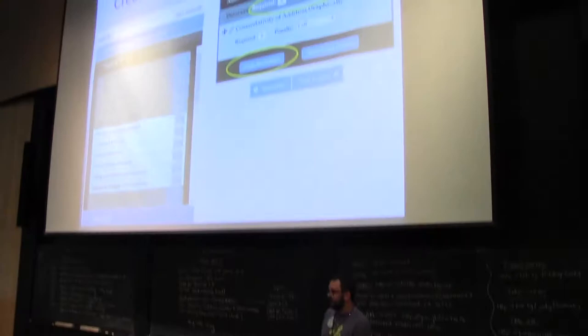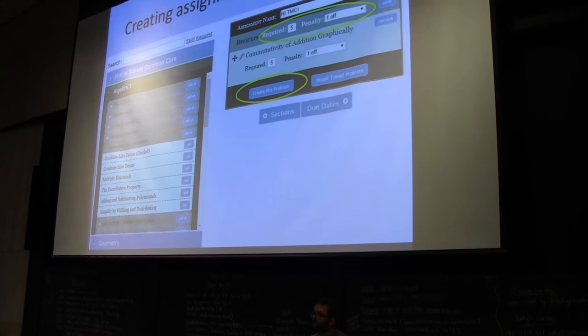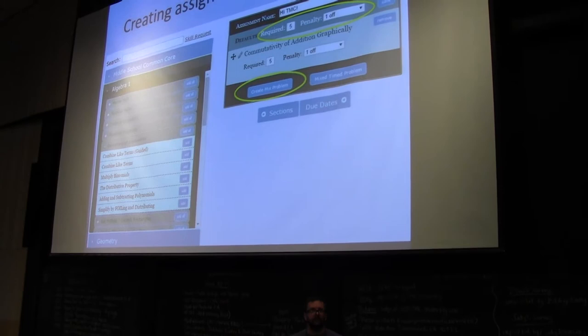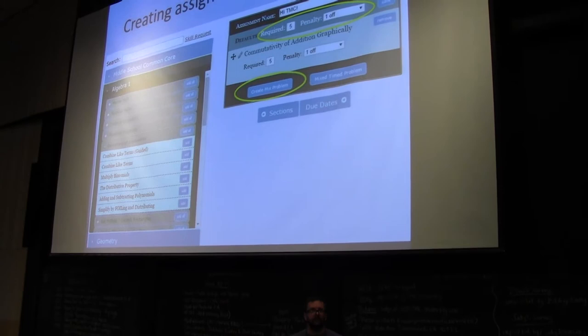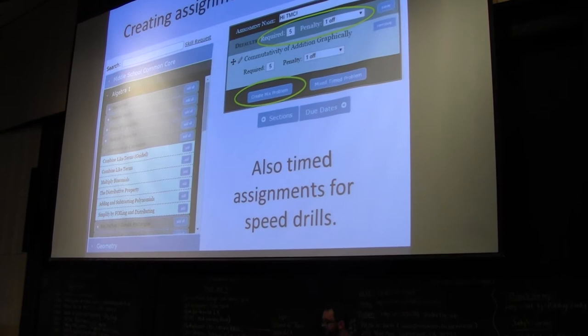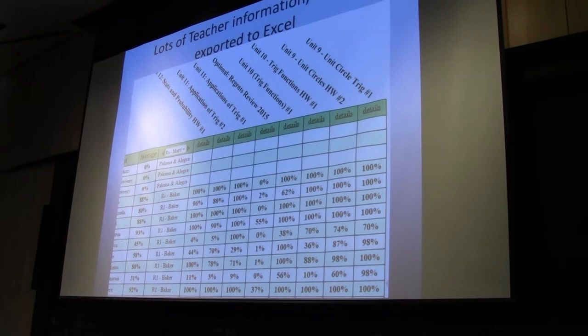You can also create mixed problems. So, one of the things we'll do for example is, for test reviews and for the regents exam review, so the state exam review, we just created a giant super big assignment that had all of the problems listed. And so, they get a question about factoring quadratics and then a question about simplifying rationals and then a question about graphing asymptotes, all this crazy stuff. And it's nice and mixed and the kids can go in and see. And you can also add timed assignments for drills and that kind of thing.